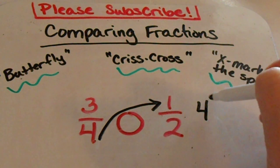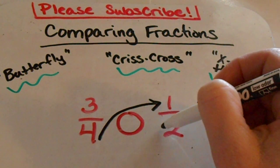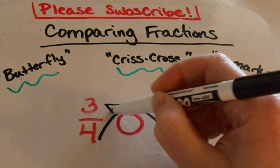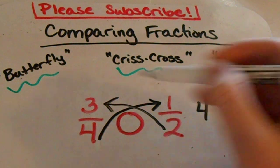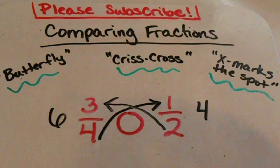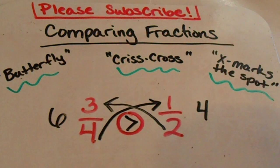Now the significance of this number doesn't really mean anything to the fraction except that it's just going to help you compare these two fractions. So now we're going to go the other way. We're going to start at the bottom, crisscross over to the other side and multiply two times three and write that answer over here. Two times three is six, so therefore six is bigger than four. Three fourths is the bigger fraction out of one half.